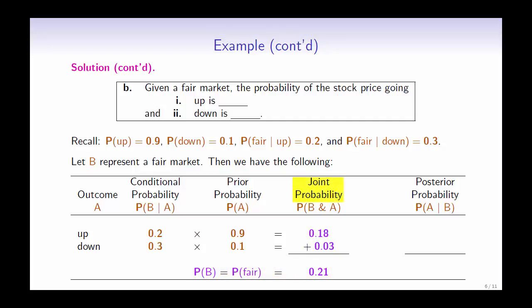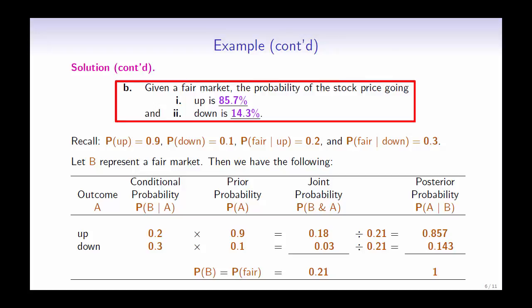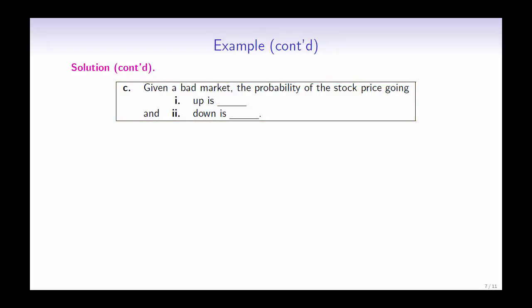Using this, we can divide the joint probability by the probability of a fair market to get the posterior probabilities. So we have 0.18 divided by 0.21, giving us the posterior probability 0.857, and 0.03 divided by 0.21, giving us the posterior probability 0.143. Checking our answer, we can see that they sum up to 1. Therefore, given a fair market, the probability of the stock price going up is 85.7% and down is 14.3%.